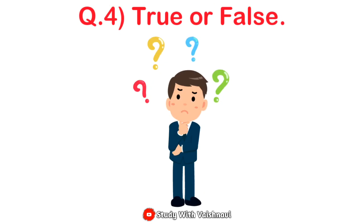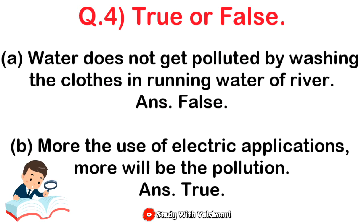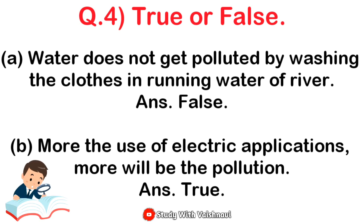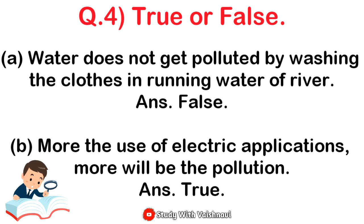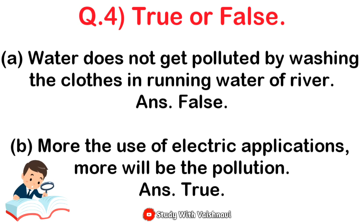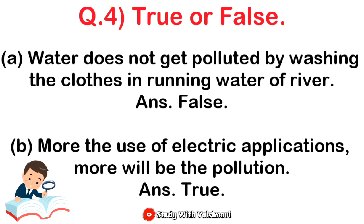Now let's move to question number four: true or false. First: water does not get polluted by washing clothes in the running water of a river. Answer: False. Even if washing of soiled clothes is done in running water, it will cause pollution, as the dirt and waste materials will be added to the water — this certainly will cause water pollution.